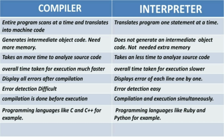Some examples: programming languages like C and C++ use a compiler, while programming languages like Ruby and Python use an interpreter. Friends, I hope you liked the video, and if you did, don't forget to